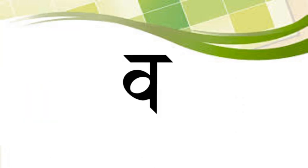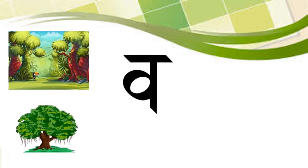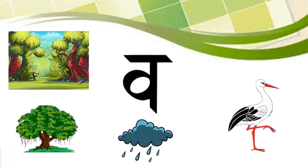Vyanjan Wo. Wo se Won — Won means jungle. Va se Vat — Vat means banyan tree. Va se Varsha — Varsha means rainy season or monsoon. Va se Vok — Vok means stock. This is the end of video one.